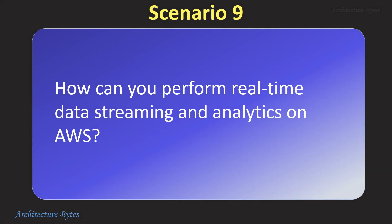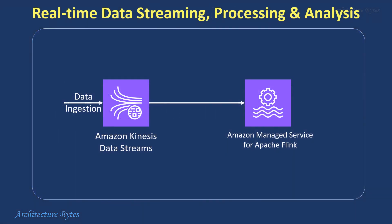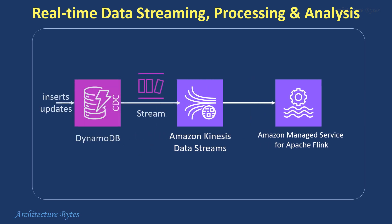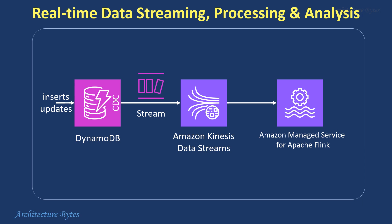How can you perform real-time data streaming and analytics on AWS? Amazon Kinesis Data Streams can be used for real-time data ingestion of large streams of data records. Amazon Managed Service for Apache Flink can read data from Kinesis Data Streams to process and analyze it in real-time. If the data source is an Amazon DynamoDB NoSQL database, we can leverage DynamoDB Streams for real-time change data capture (CDC). This service automatically captures and delivers a stream of modification records whenever data changes within DynamoDB tables. The stream can be ingested into Kinesis Data Streams and then to Amazon Managed Service for Apache Flink to perform real-time analytics on data.